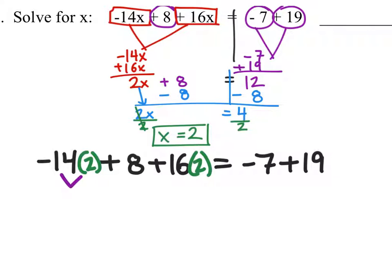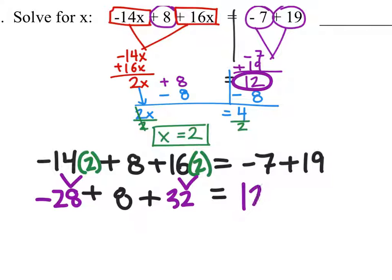I would combine negative 14 times 2. I'm just using order of operations here. Negative 14, if I have two of those, I've got negative 28. If I have two 16s, I've got 32. And we still are adding the 8, and that's plus 32. I could combine the right side if I want, which we already know because we did it up here. Negative 7 plus 19 is 12.